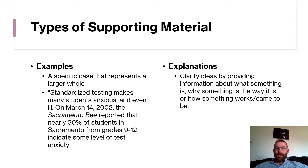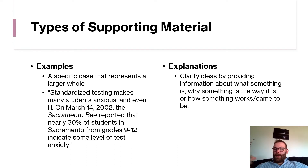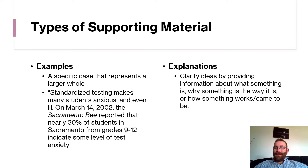Explanations are where you clarify an idea by providing information about what something is, why it is the way it is, or how it came to be. For example, if you're defining what standardized testing is in the first place, you would thoroughly explain it: 'Based on Smith and McCrowski's 2008 research, standardized testing can be defined as...' You're explaining in more depth what it actually is — covering its definition, origin, and how it works.